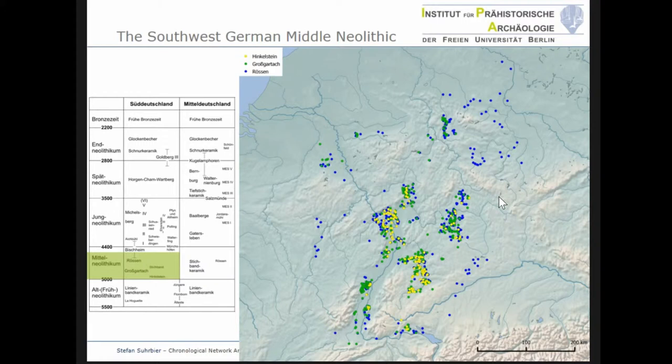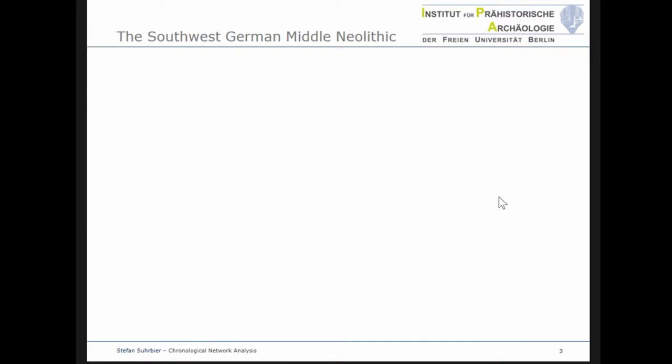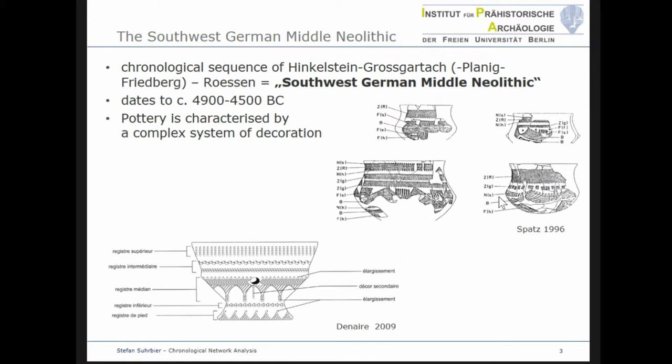In this context I use network analysis not in the classical sense as social network analysis, but rather for studying chronological relations. First of all, I want to show you some characteristic pots from this period since this is the basis for the analysis I want to present to you. The pottery of Southwest German Middle Neolithic is characterized by a complex system of decoration, which is organized in horizontal zones. Above, you see the classification scheme developed by Helmut Spatz in the 1990s for the Middle Neolithic in the Neckar area.